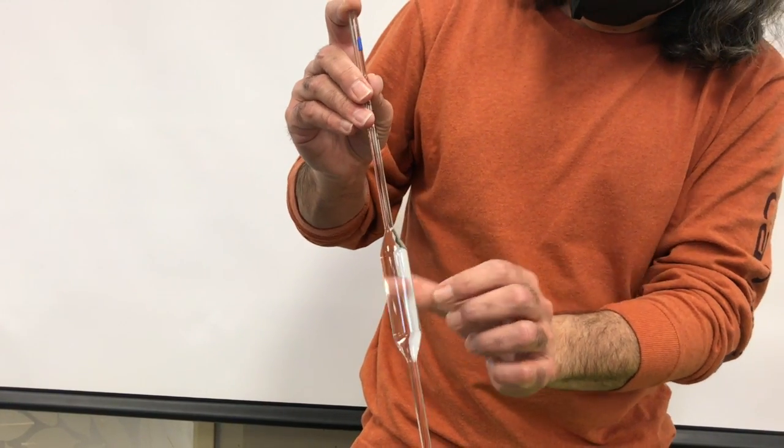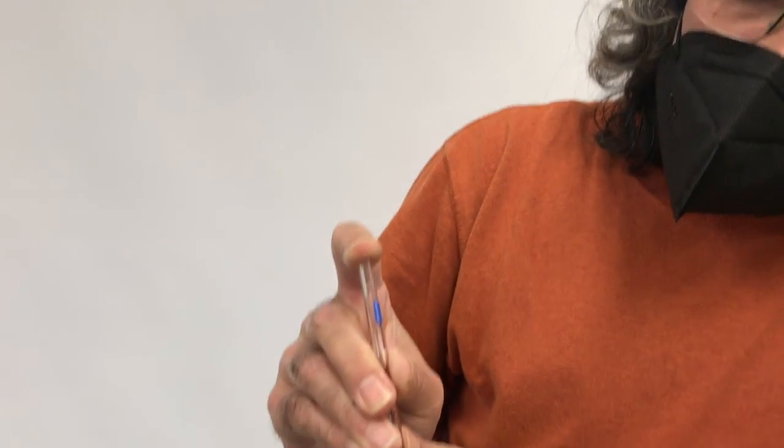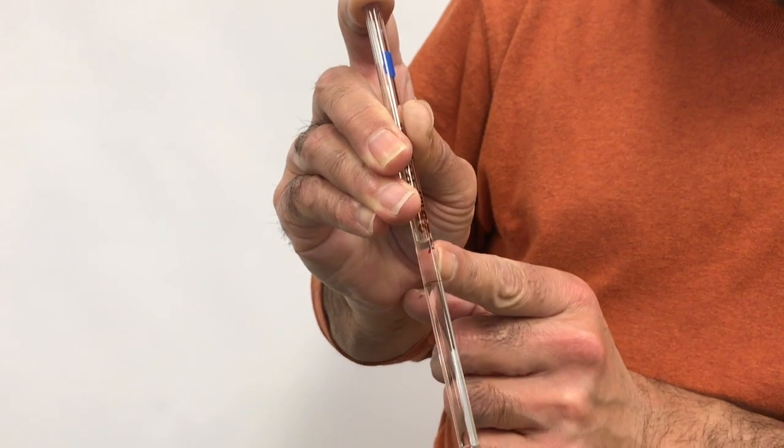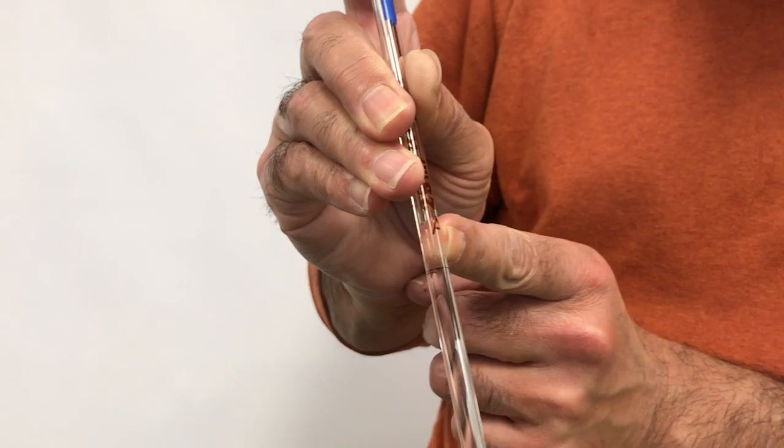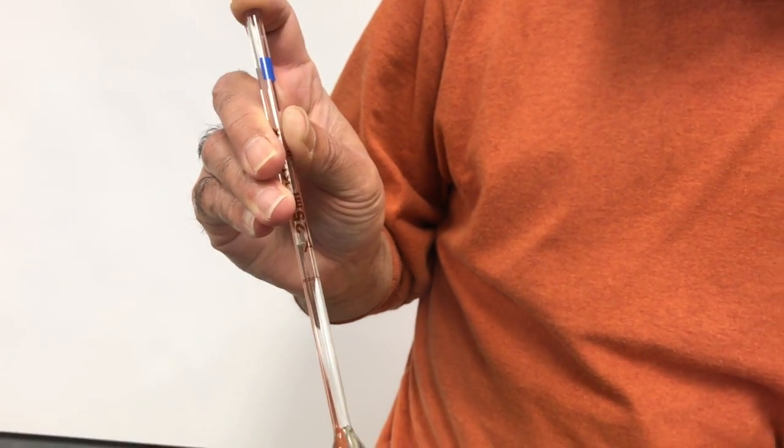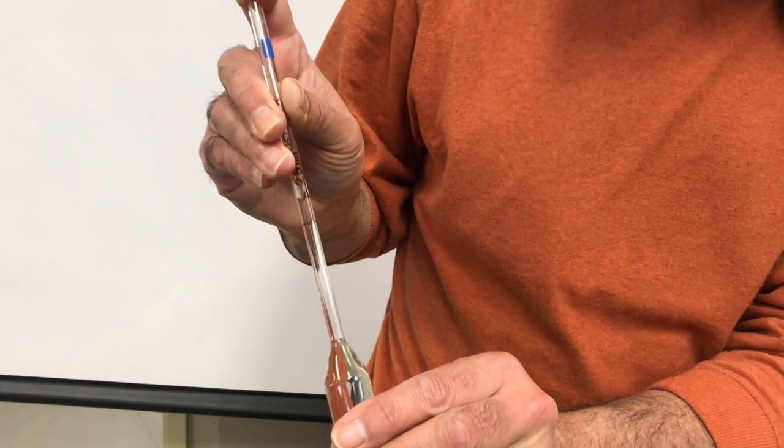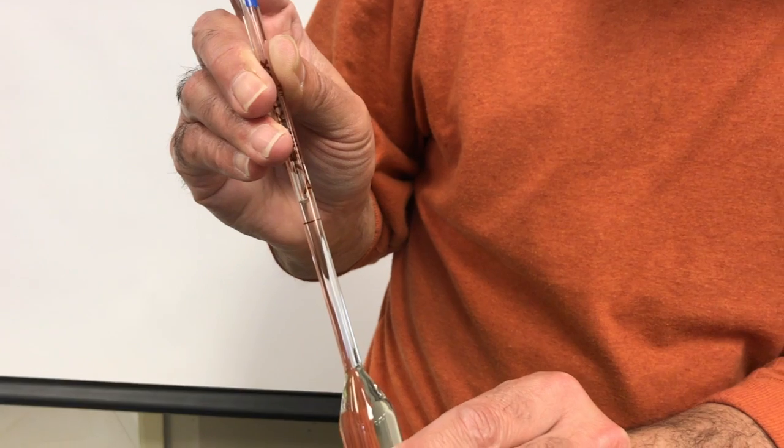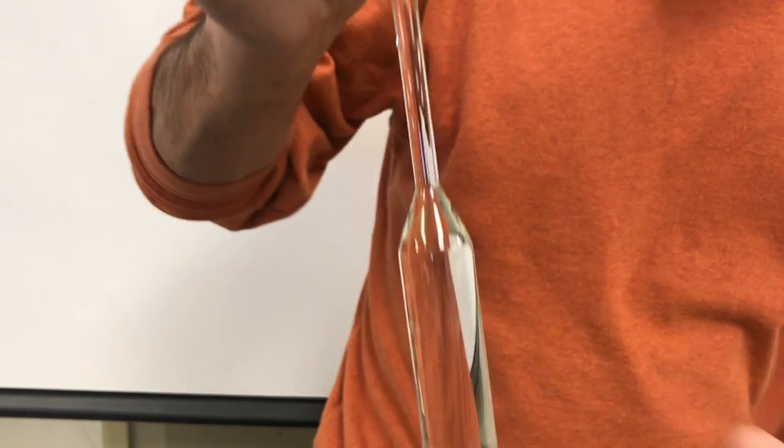So all volumetric pipettes are marked to a set volume. This is a 25 ml and to get exactly 25 ml, you need to bring the meniscus right on top of the 25 ml mark on the volumetric pipette. Again, I went past the mark intentionally and I'm just slowly going to release some of the vacuum until I get the meniscus to go right on the line.